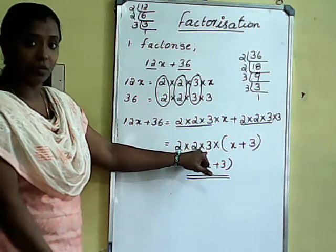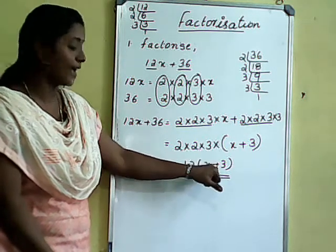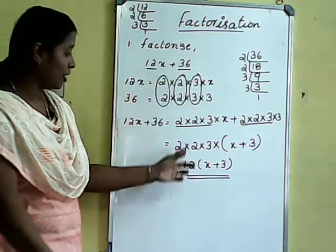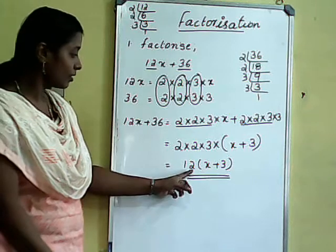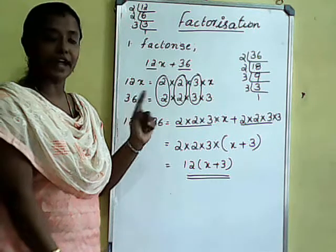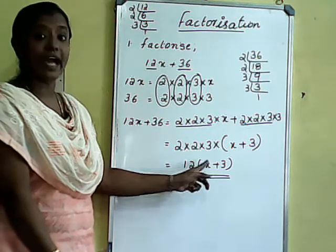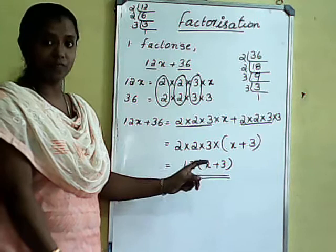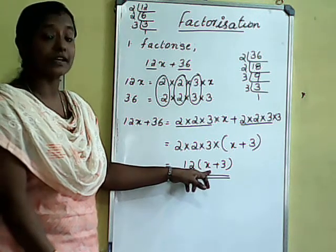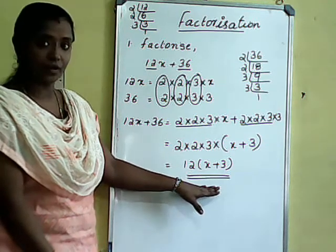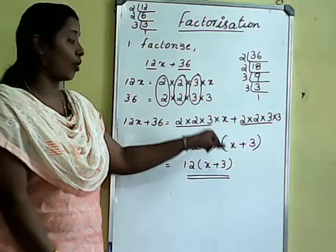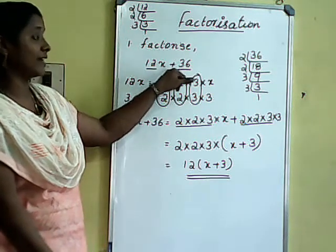So 2 into 2 into 3 is 12 into (x plus 3). When we apply the distributive law, can we get back the original? 12 into x is 12x, and 12 into 3 is 36. So the irreducible factors of this expression are 12 and (x plus 3). These expressions cannot be expressed further as irreducible factors. So 12 into (x plus 3) is the irreducible factorisation of 12x plus 36.